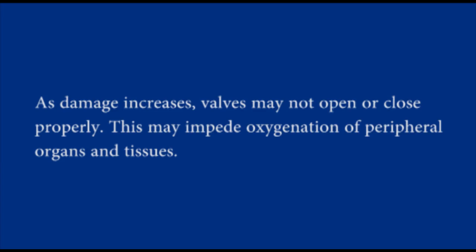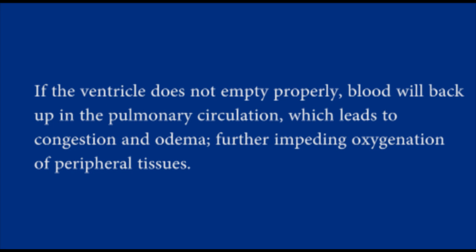And this is the start of rheumatic heart disease. As more damage occurs, functional deficits are seen. Rheumatic heart disease predominantly affects valves in the left side of the heart. As damage increases, they may not open or close properly. This may impede oxygenation of peripheral organs and tissues. If the ventricle does not fill properly, blood will back up in the pulmonary circulation, which leads to congestion and edema, further impeding oxygenation of peripheral tissues.